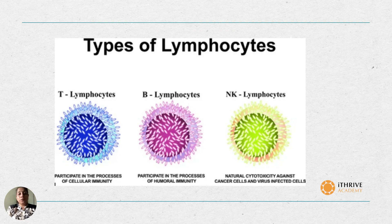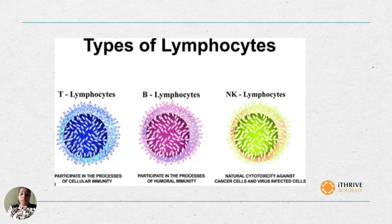The different types of lymphocytes are the T-lymphocytes, which participate in the processes of cellular immunity; then the B-lymphocytes, which participate in the processes of humoral immunity; and the natural killer lymphocytes, which provide natural cytotoxicity against cancer cells and virus-infected cells.